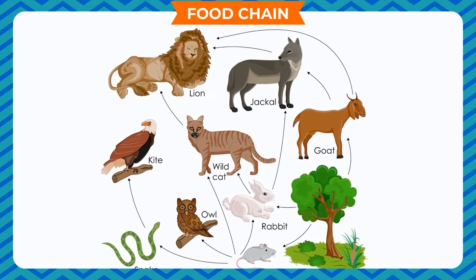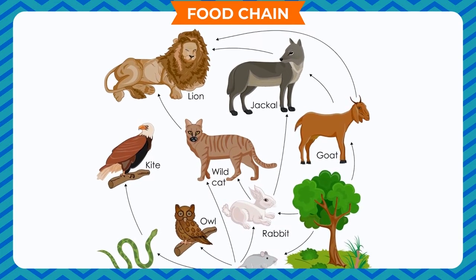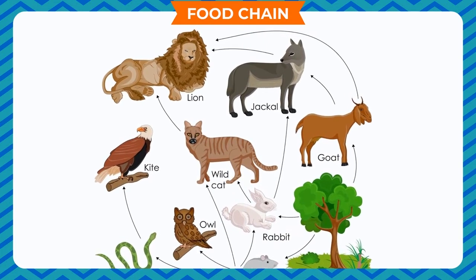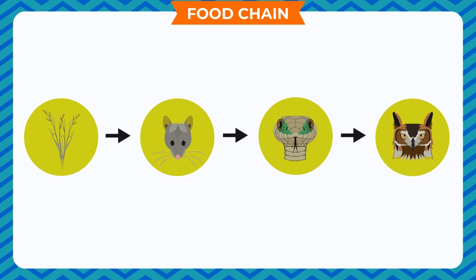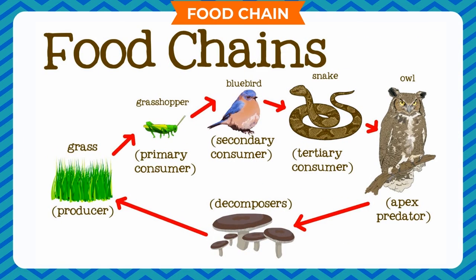Organisms in a series depend on each other for their food. This series of living organisms is known as a food chain. We know that food on burning produces energy. In a food chain, living beings eat their predecessor as food, so energy is transferred from one animal to another in a single direction.